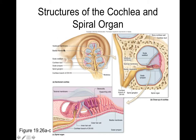Once the stapes vibrates, it vibrates on the oval window, causing endolymph in the cochlea to vibrate. That vibrating fluid travels along the cochlea until it reaches a specific patch of cochlear membrane sensitive to that specific frequency, then crosses over and travels back to the round window. High-frequency sounds are picked up by the beginning parts of the cochlea, whereas low-frequency sounds are picked up by more distal areas.